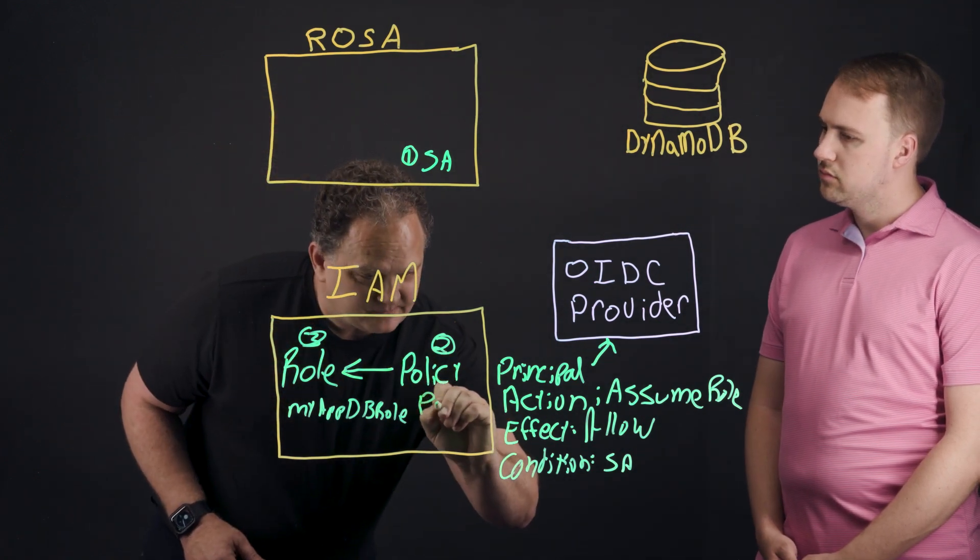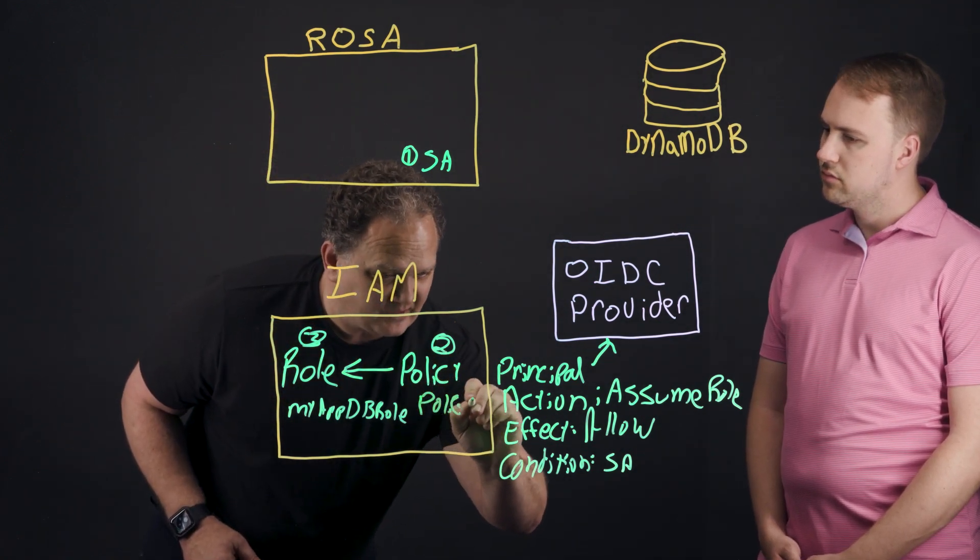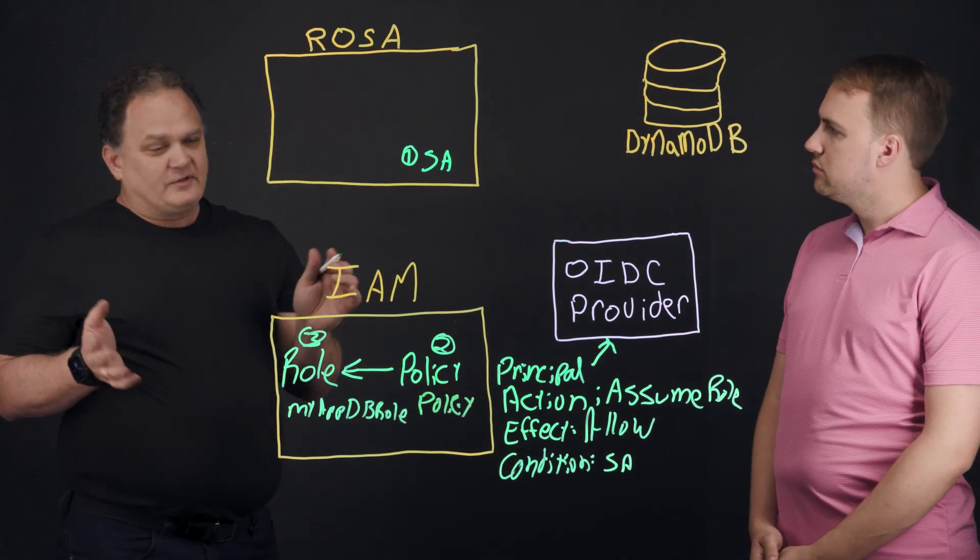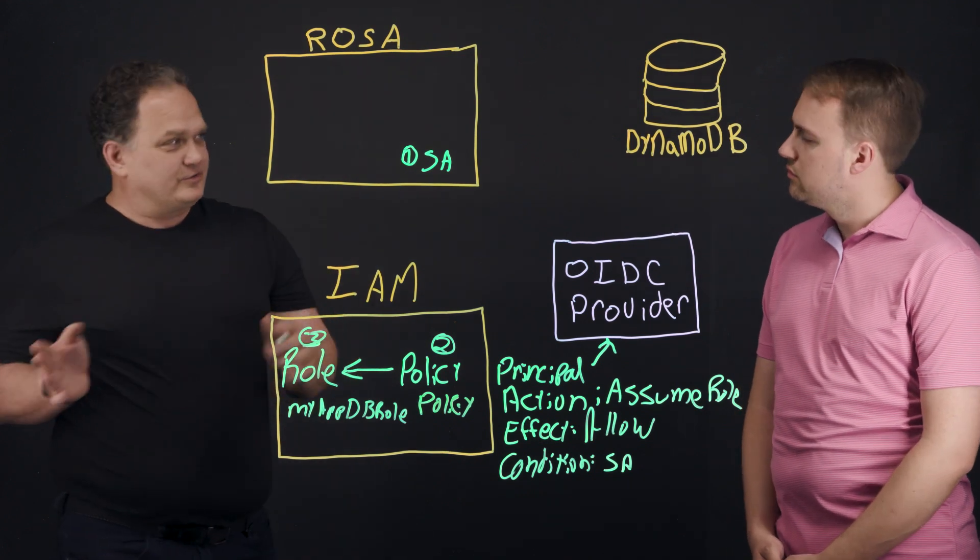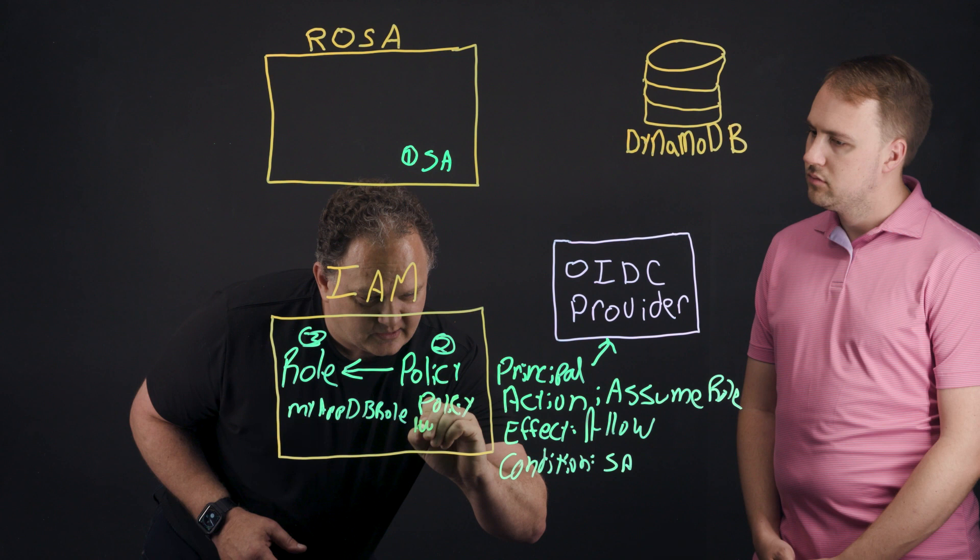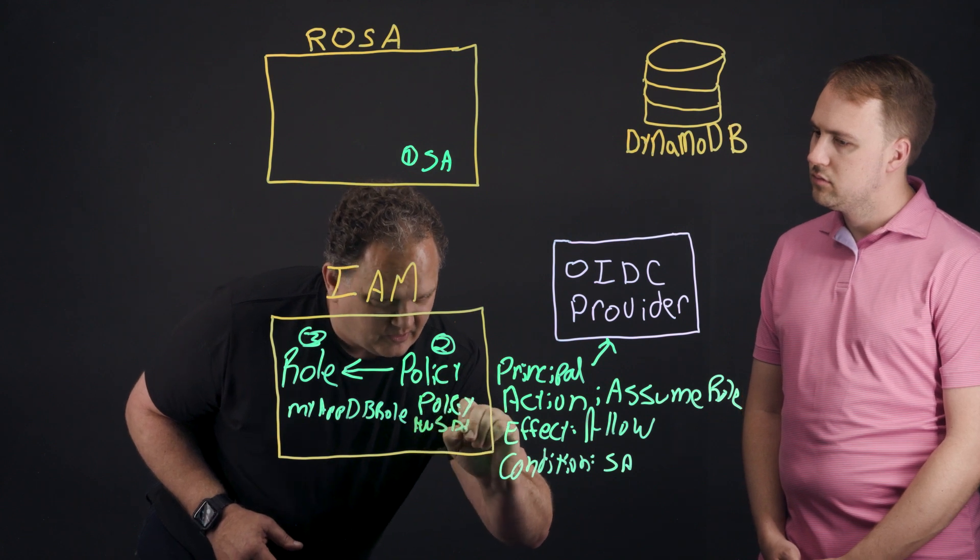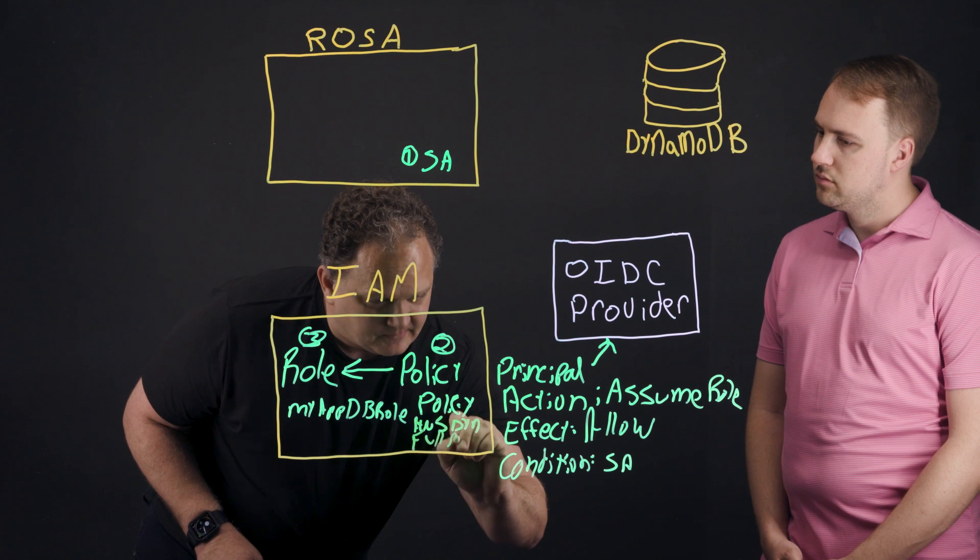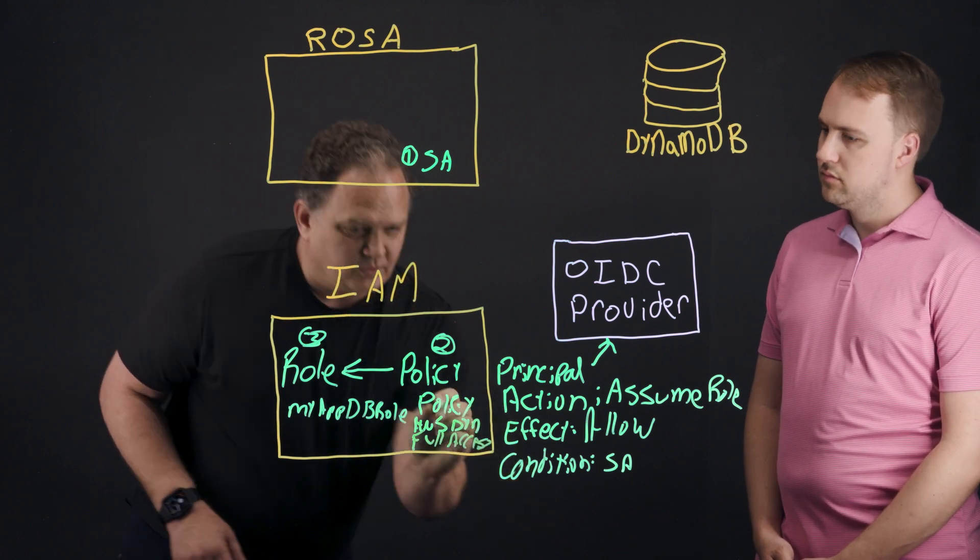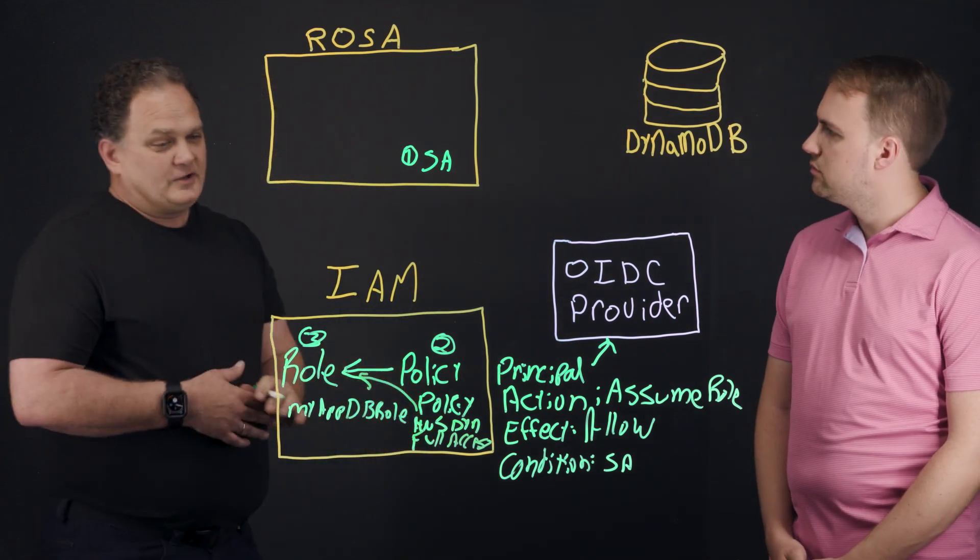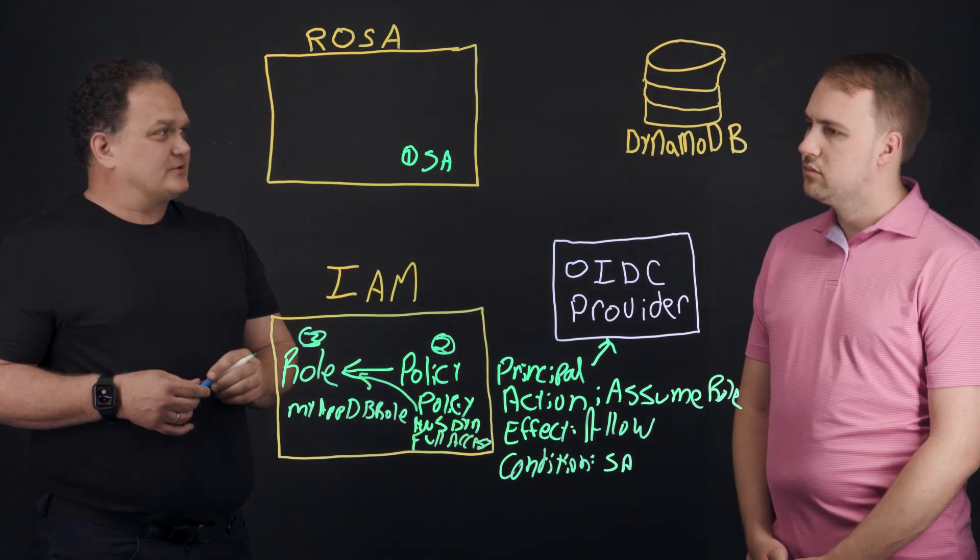We create another policy. We don't create the policy. We attach a policy. So within AWS, like DynamoDB as an example, they have a lot of pre-built policies. So we can create our own or use something that comes with AWS. And they have one called AWS DynamoDB, there's one called full access. So assign this policy to that role. And then this completes the IAM portion of this.